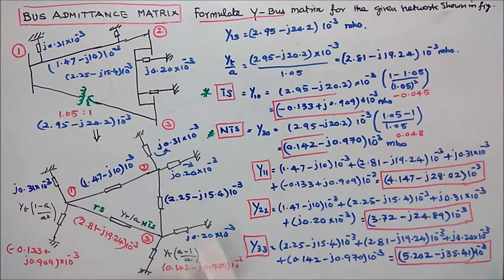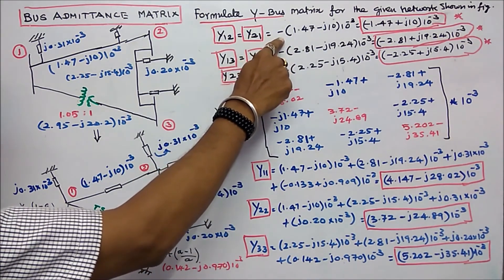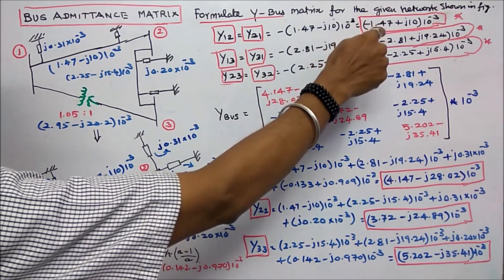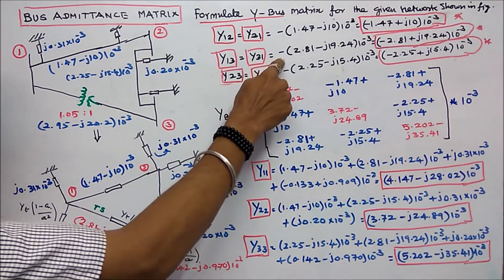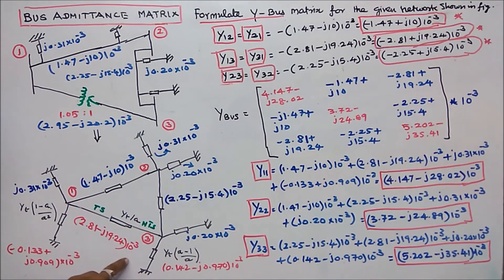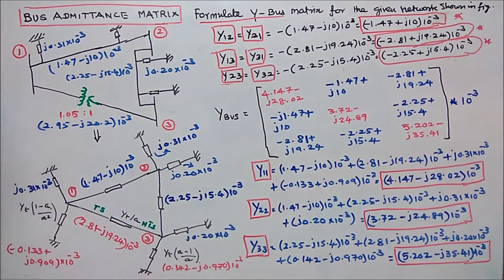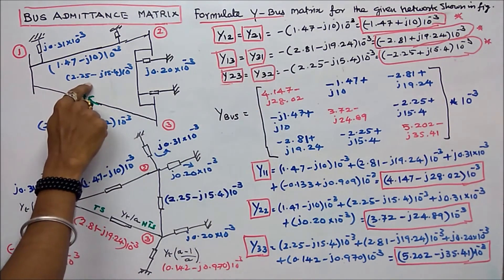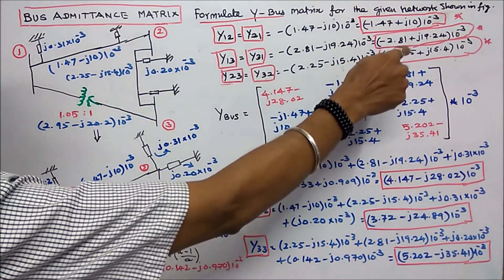The next step is to find the off-diagonal elements. y12 equals y21, which is minus 1.47 plus j10 into 10 power minus 3. y13 equals y31, which is minus 2.81 minus j19.24 into 10 power minus 3. y23 equals y32, which is minus 2.25 plus j15.4 into 10 power minus 3.